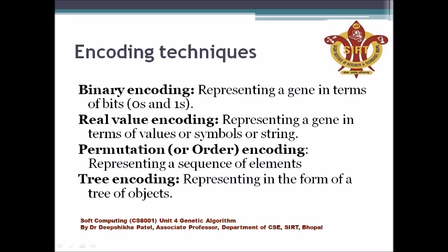Now let us look at the encoding schemes. In binary encoding, a gene is represented in terms of bits — zeros and ones. We encode our genotypes or factors as zeros and ones. If you are using real value encoding, a gene is converted in terms of real values, symbols, or strings. In binary we only use zeros and ones; in real value encoding we use real values, which can be symbols or strings.